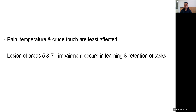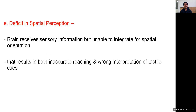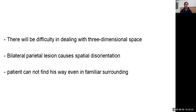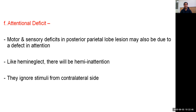Lesion of areas 5 and 7 causes impairment in learning and retention of various tasks. There is also deficiency in spatial perception — the brain receives sensory information but is unable to integrate it for spatial orientation, resulting in both inaccurate reaching and wrong interpretation of tactile cues. Difficulty in dealing with three-dimensional space occurs, and bilateral parietal lesions cause spatial disorientation — patients cannot find their way even in familiar surroundings. Posterior parietal lobe lesions also cause attention deficits and hemi-inattention with neglect of stimuli from the contralateral side of the body.